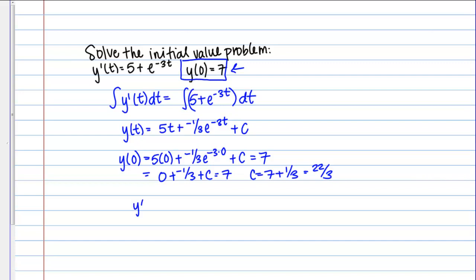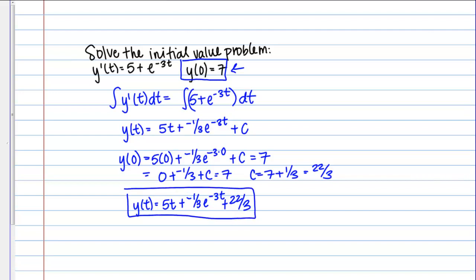Then my final solution is y of t equals 5t plus negative one-third e to the negative 3t plus 22 thirds. If you want to check your answer for an initial value problem, you would check two things: first, that the derivative of y of t gives you 5 plus e to the negative 3t, and second, that y of 0 equals 7. If both of those things are true, then you know you've done the problem correctly.